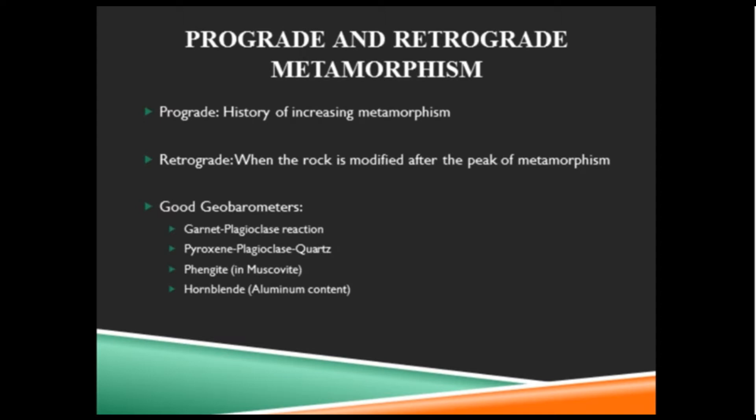Some other good geobarometers - things that tell you about pressure. You think of a barometer for checking air pressure, while a geobarometer is something for checking rock pressure. Garnet-plagioclase: this reaction, if we start getting more garnet, we know it's a much higher pressure system; the rock formed under extreme pressure. If we have no garnet and we have plagioclase, then we know it's a lower pressure system. Pyroxene-plagioclase-quartz: pyroxene is the higher pressure - higher temperature also, but specifically since we're talking geobarometer, higher pressure - and then breaking down into plagioclase and quartz for lower pressure.